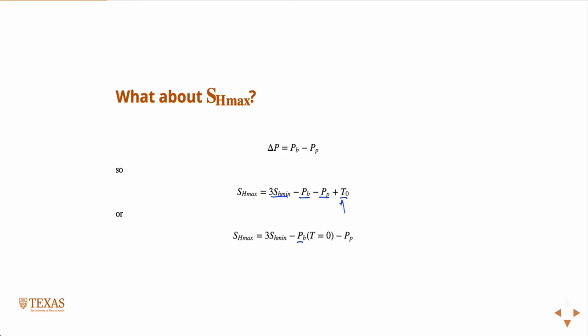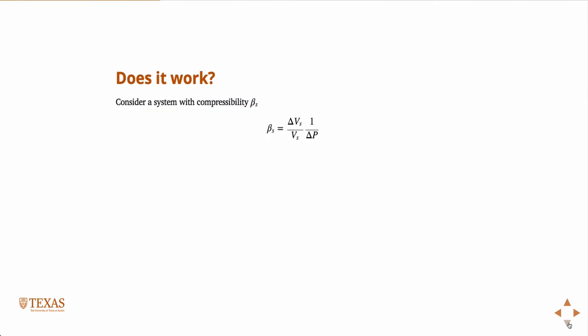But the truth is it doesn't really work very well in practice. And the reason is, if you consider a system that has this compressibility, we talked about compressibility when we talked about material properties earlier in the class. Compressibility is like one over the bulk modulus. And the bulk modulus is like a measure of a material's resistance to volumetric compression, the volumetric strain divided by the volumetric stress.